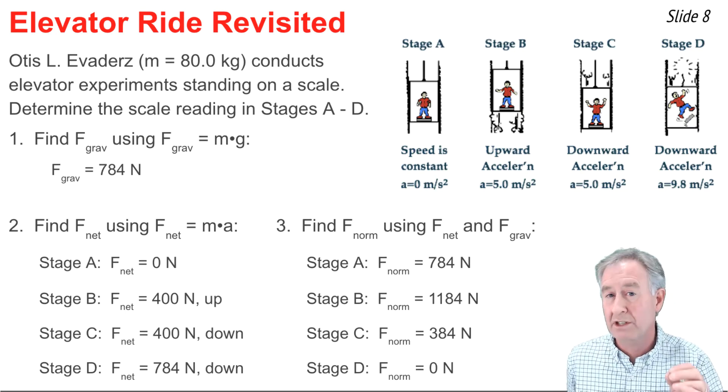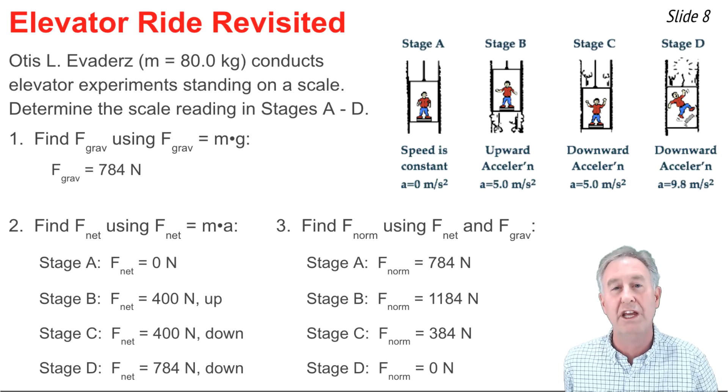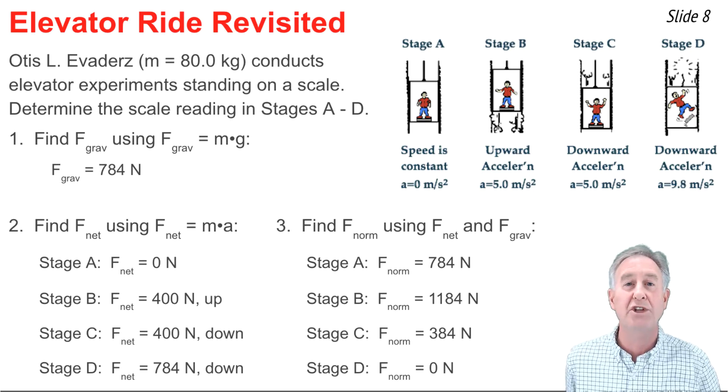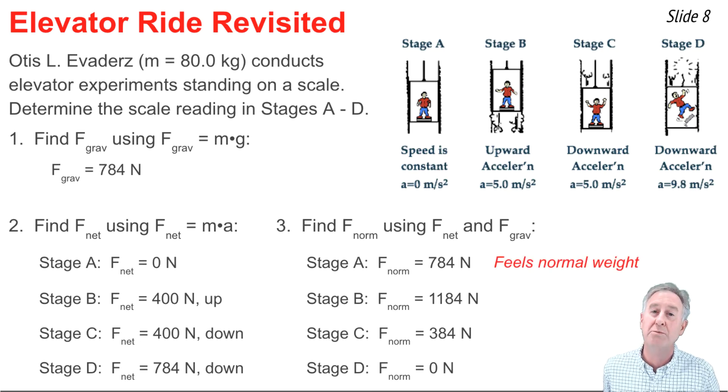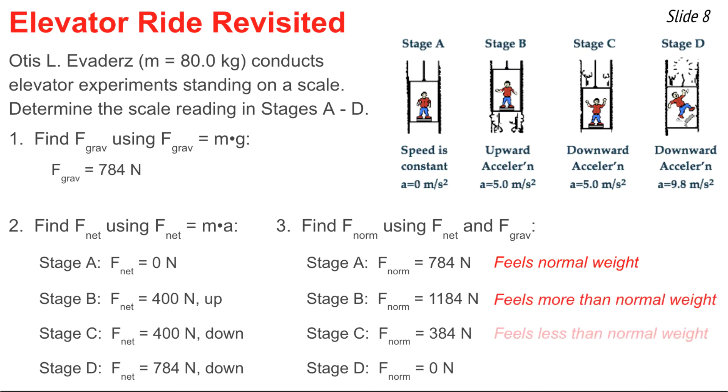Now, if I look at my normal force values, I can make some conclusions about the sensations of weight that Otis experiences. In stage A, Otis senses that he's his normal weight. In stage B, Otis feels heavier than normal. And in stage C, Otis would feel like he weighs less than his normal weight. And finally, in stage D, where the normal force is zero, Otis would sense absolute weightlessness.